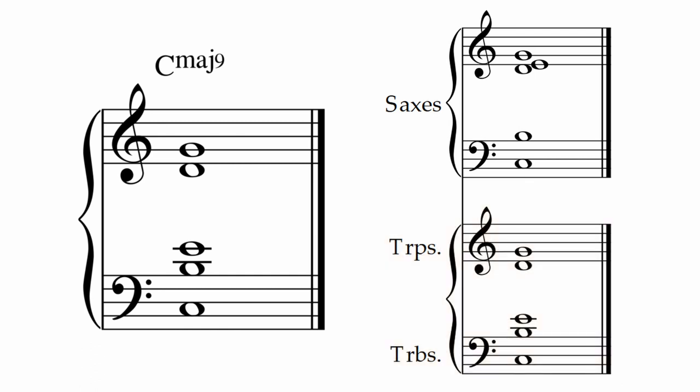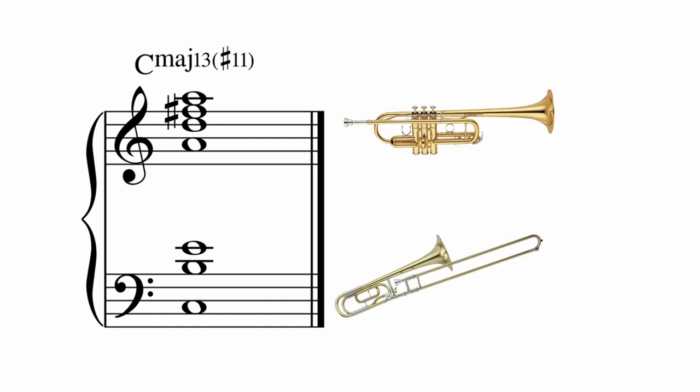And now, tutti. Let's take a voicing that has a larger range. Here is how I voiced it earlier. Trombones, nice and solid. And the trumpets have the D triad, with the melody doubled an octave below by the fourth trumpet. That's a classic voicing.